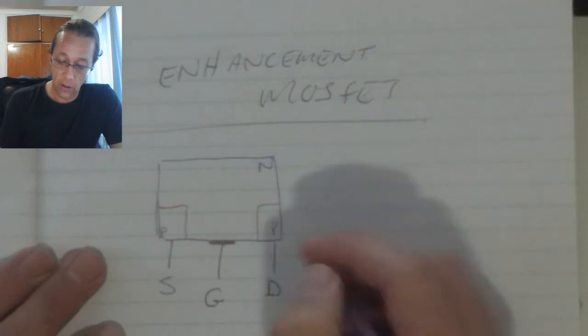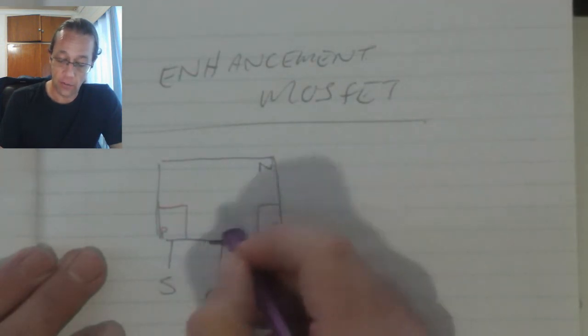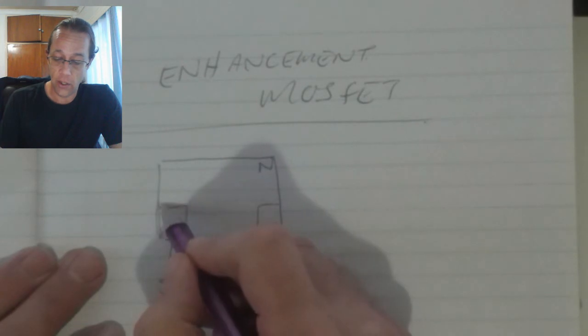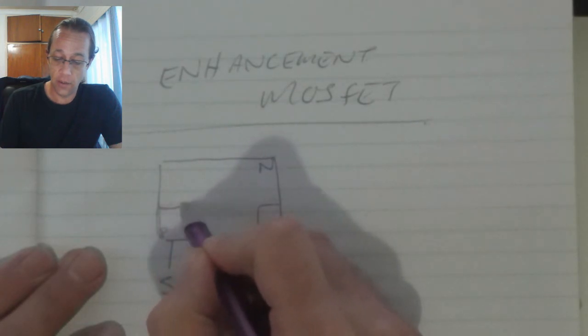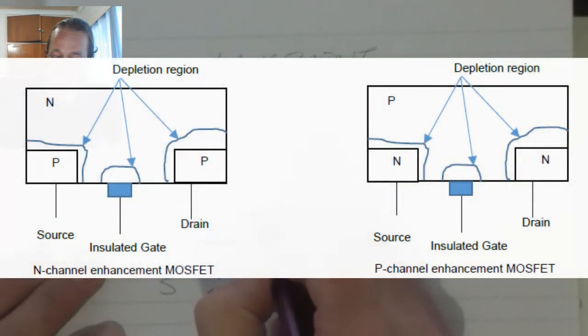And when we look at the biasing of the formation of depletion regions, we see that the P-N junction over there is going to form a depletion region. Same over there.